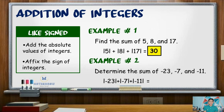Absolute value of negative 23 is positive 23. Absolute value of negative 7 is positive 7. Absolute value of negative 11 is positive 11. Adding 23, 7, and 11 gives us a sum of 41. Since all the integers are negative, we affix the negative sign to the sum, giving us negative 41.